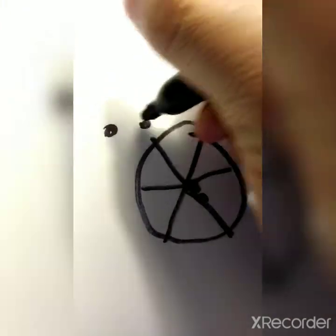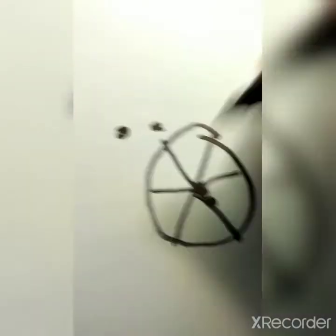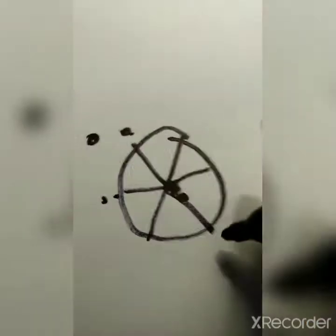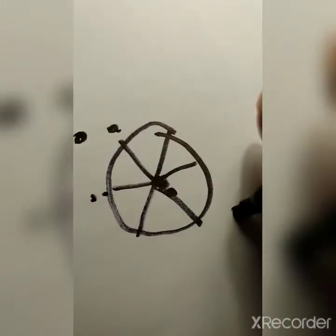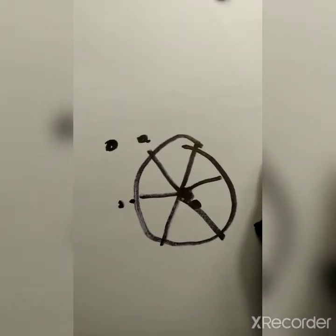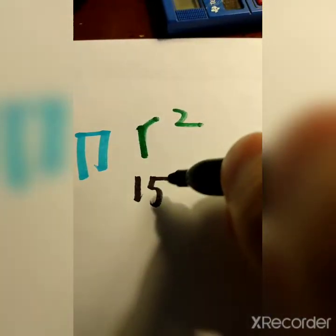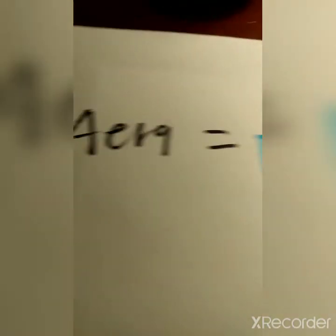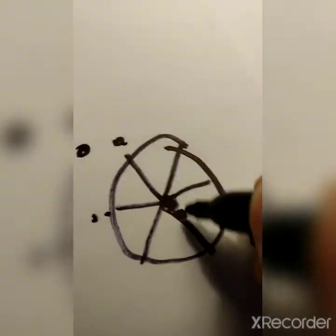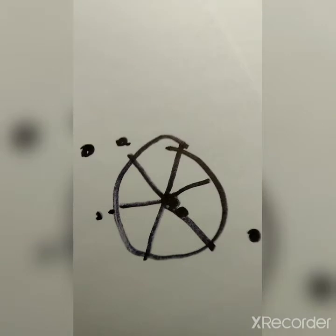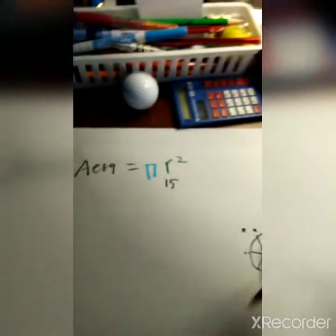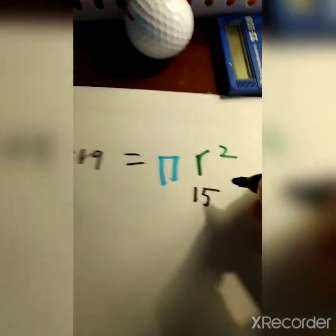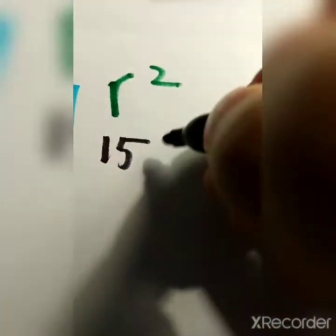If SpongeBob is there, here to there is 15 feet. If SpongeBob is over there, here to there is still 15 feet. No matter where SpongeBob stands, the distance to Squidward is 15 feet. So the radius is 15 feet. What we're trying to find is: what is the area of Squidward's circle? We can determine this using the formula — area equals pi r squared — and 15 feet is the radius.